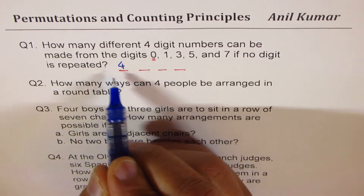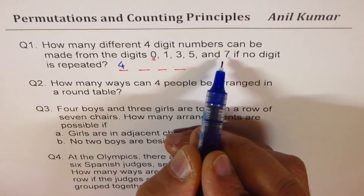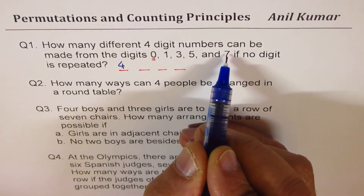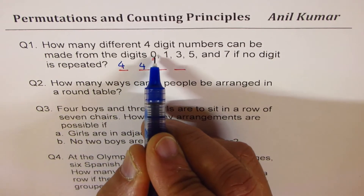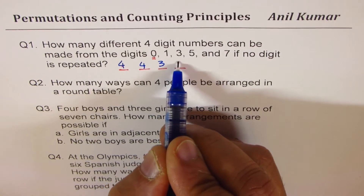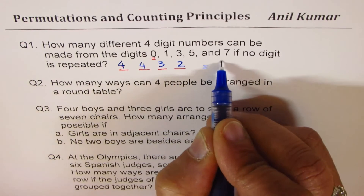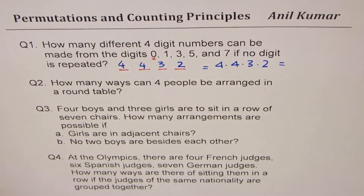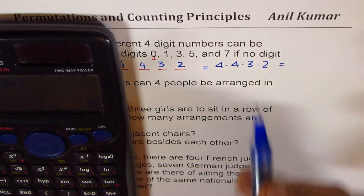Once you fill the first position with one of the non-zero digits, you can now put zero anywhere. So you're left with four options for the second position. Let's say you fill it with seven — you are left with four numbers, then three, then two. So the answer is the product: 4 × 4 × 3 × 2 = 96.